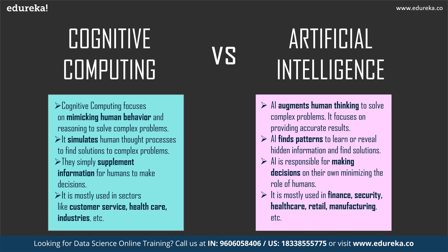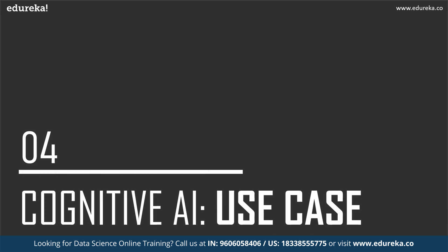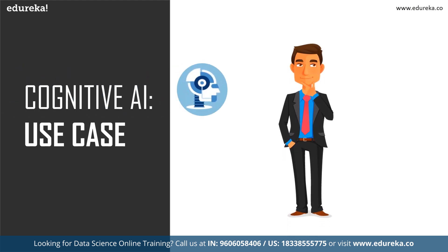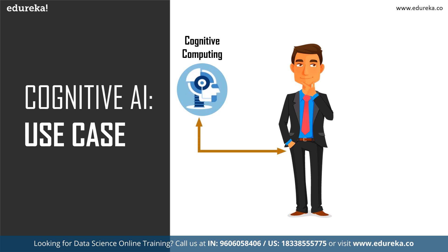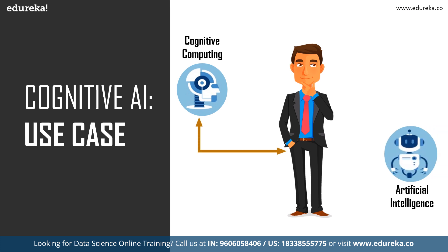Cognitive AI combines cognitive computing and AI together. Consider a use case: a person is deciding on a career change. An AI assistant will automatically assess the job seeker's skills, find a relevant job where skills match the position, negotiate pay and benefits, and at the closing stage inform the person that a decision has been made on their behalf.